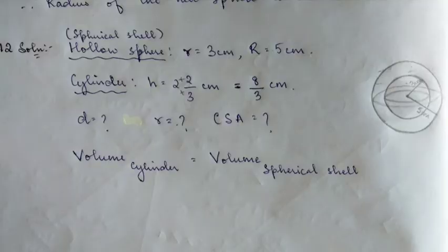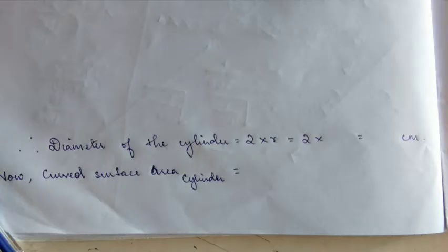Copy this part and substitute the formula for volume of cylinder and volume of spherical shell. Find the radius first, then once you have the radius you can find the diameter by multiplying by 2, and then you can also find the curved surface area of cylinder using the formula.